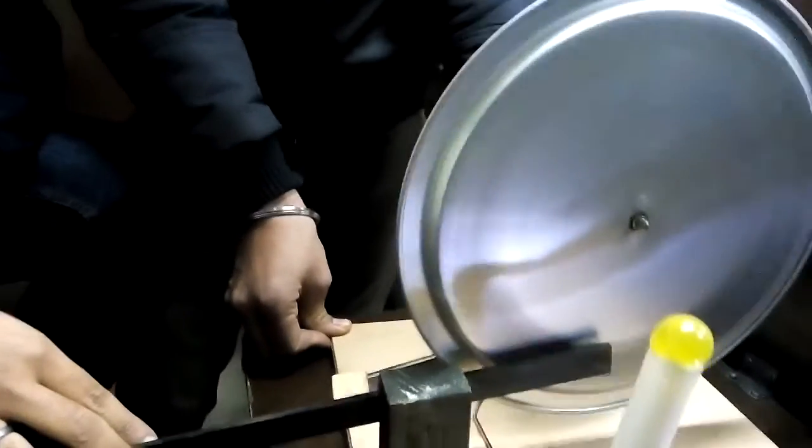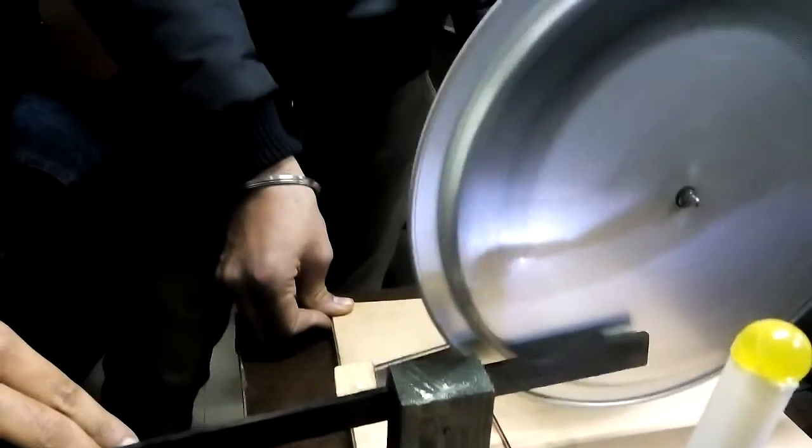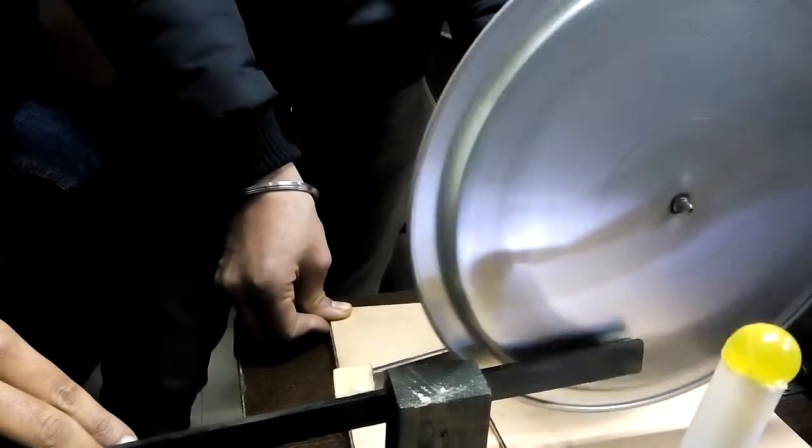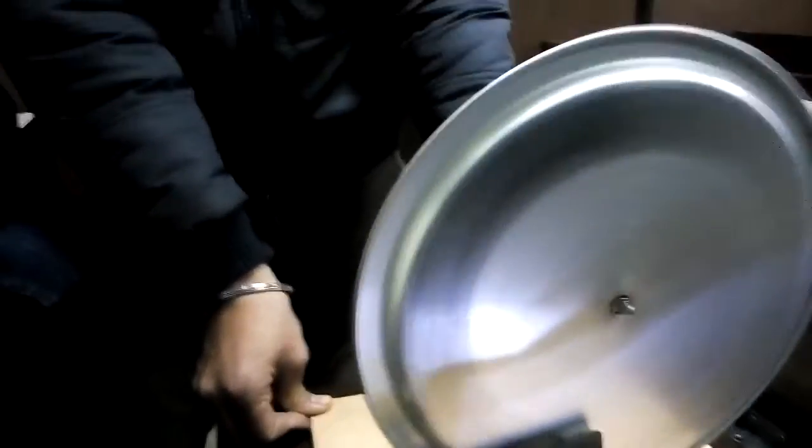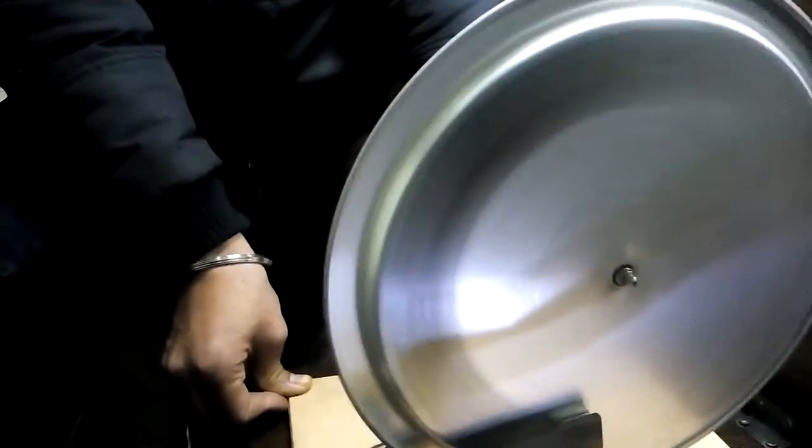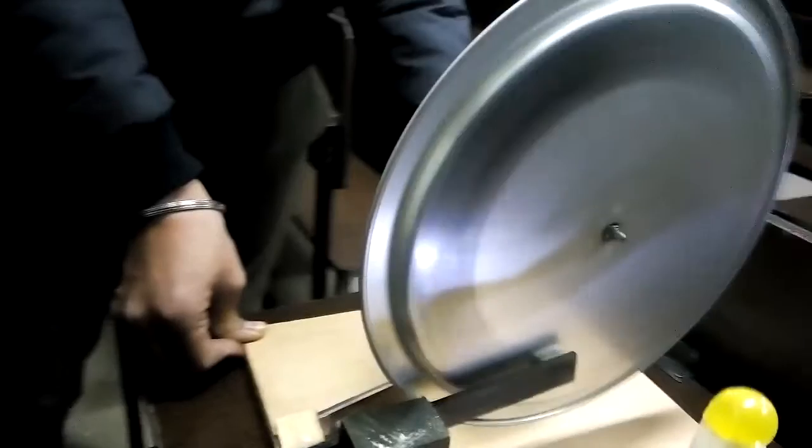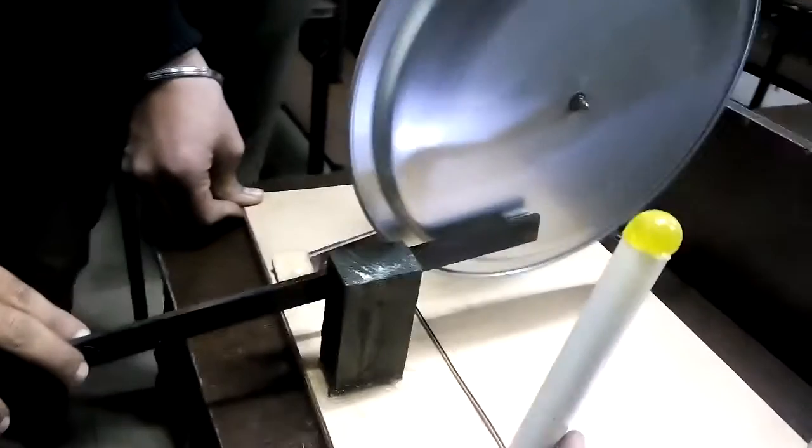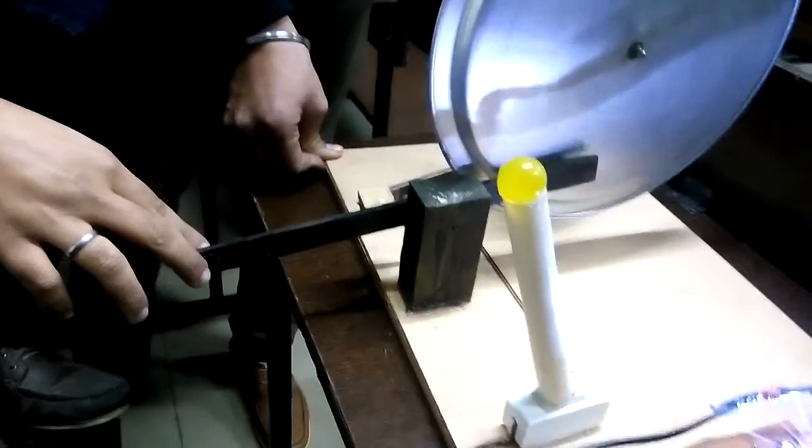Once the magnet comes into the vicinity of the plate, the speed of the plate gets reduced. In general braking mechanism, we press the lever. Once the brake makes the speed slow, we push the lever towards the downward direction and the whole system gets stopped.